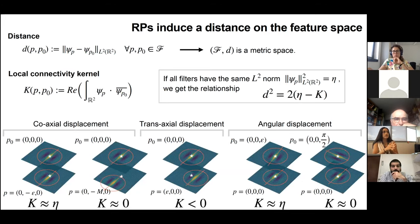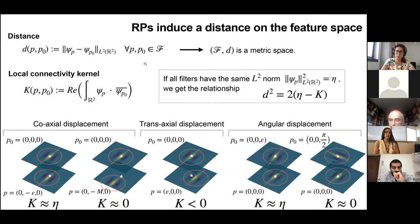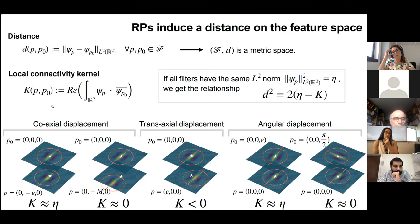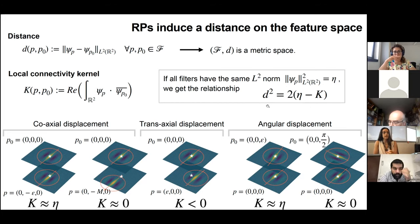Given a set of receptive profiles, the distance I want to define on the feature space is simply the restriction of the L2 distance between the filters. Given two points P and P0 in the feature space, the distance between them is just the L2 distance between the two corresponding filters ψ_P and ψ_P0. So we're defining a metric space. In L2 we also have a scalar product, which we use to define a kernel on the feature space describing the strength of interaction between two units. If we assume all filters to be normalized to the same L2 norm, the distance is obtained as a constant minus twice the kernel — so points that are close according to the distance are strongly connected according to the kernel.